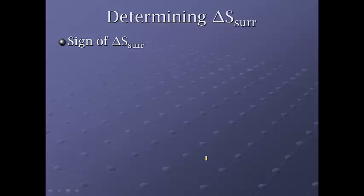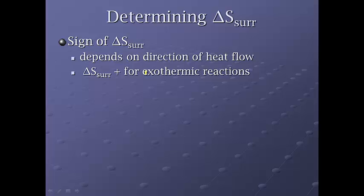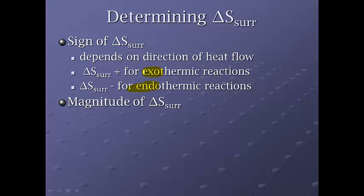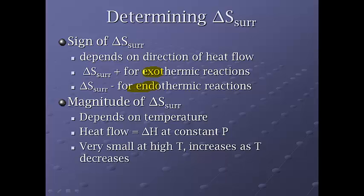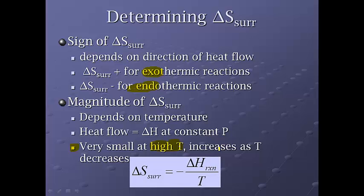So the signs are important. You need to be able to remember what this is going to look like and how these go. Depends on the direction of the heat flow. So, typically the delta S of the surroundings is positive for exothermic reactions. So if you get an exothermic reaction, it's going to increase energy, it's going to increase the randomness. It's going to be negative for endothermic reactions because they're going to have to suck some energy in from the outside for it to occur. And the magnitude depends on the temperature. Heat flow is equal to delta H at constant pressure. It's going to be very small at high temperature. It's going to increase as temperature decreases. And this is our equation for this. Delta S of the surroundings is equal to negative delta H of the reaction over the temperature that it occurs at.